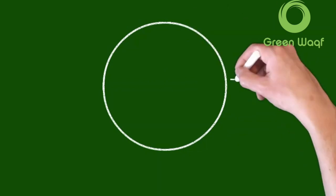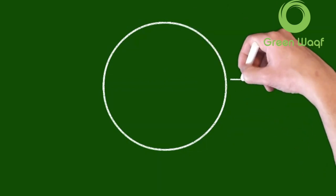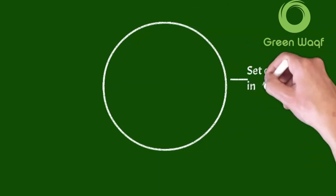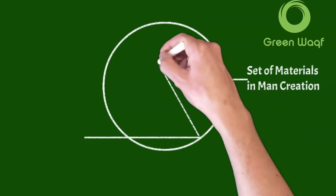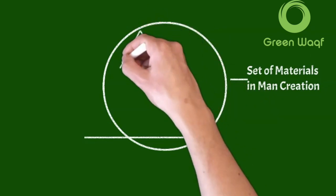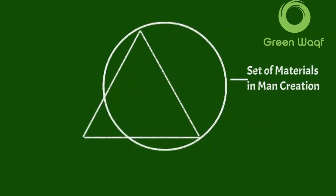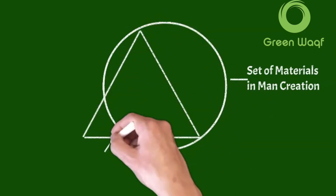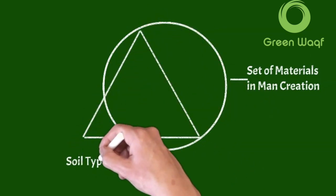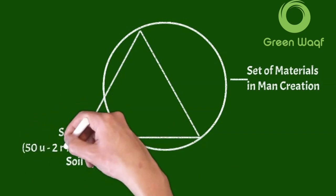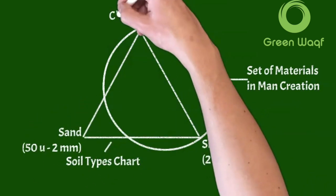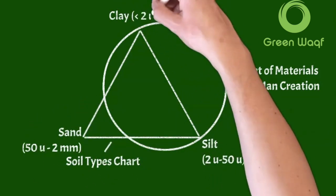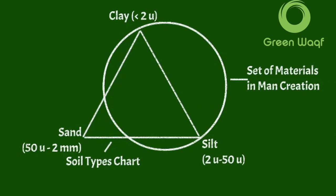Let us look at the details of the verses that explain human creation. I will start by drawing the target we want to know from these verses, namely the set of raw materials for human creation. Then I will compare it with soil science, especially regarding type of soil. Then I will map between the news from the Quran and modern science.